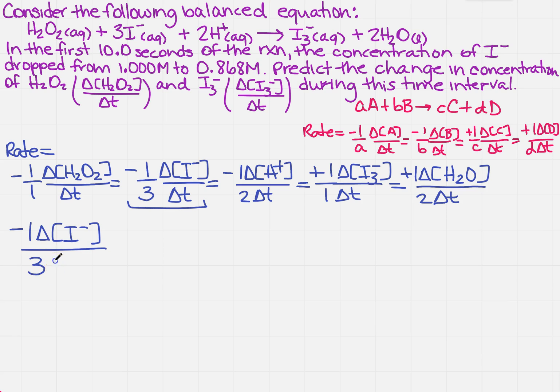Well, it says that it dropped. If it dropped, that means I'm going to leave the fraction in front, so minus 1 over 3, times, and it went from 1 to, so the final one is 0.868 minus 1.000.